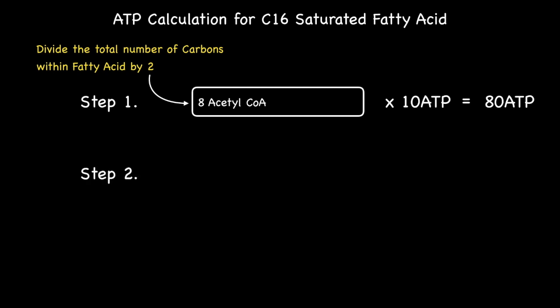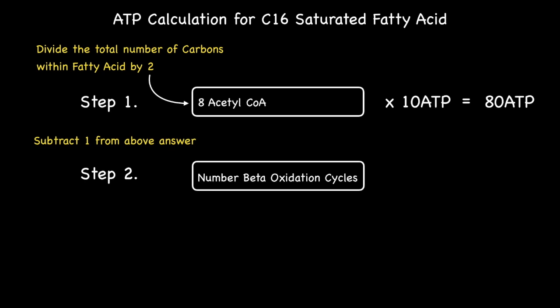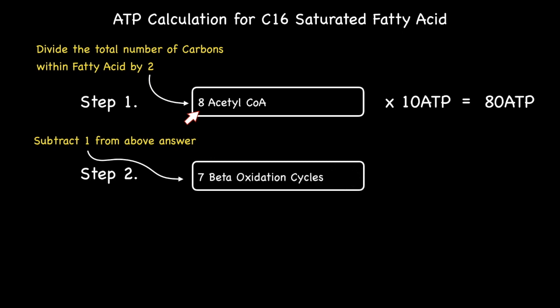Let's now move on to step number two. Using the same C16 saturated fatty acid we can now calculate the number of ATPs generated from the reduced coenzymes produced from each beta-oxidation cycle. We first need to calculate how many beta-oxidation cycles it takes to produce the above number of acetyl-CoA. The number of beta-oxidation cycles is equal to one less than the number of acetyl-CoA produced, resulting in seven beta-oxidation cycles. Each beta-oxidation cycle generates four ATPs from its reduced coenzymes FADH2 and NADH, so multiplying seven by four results in 28 ATPs.